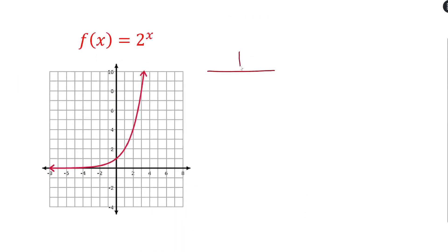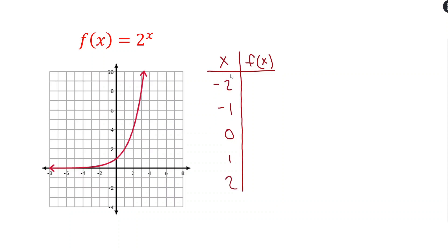I'm sort of giving away what the graph looks like, but I'm going to show you how we could have come up with this graph on our own. This strategy works for any function — if you have no idea what a graph looks like, you can get some idea by creating a table and plotting points. So if I plug in negative 2, negative 1, 0, 1, and 2, I get some output for each input, and those correspond to points on the graph.